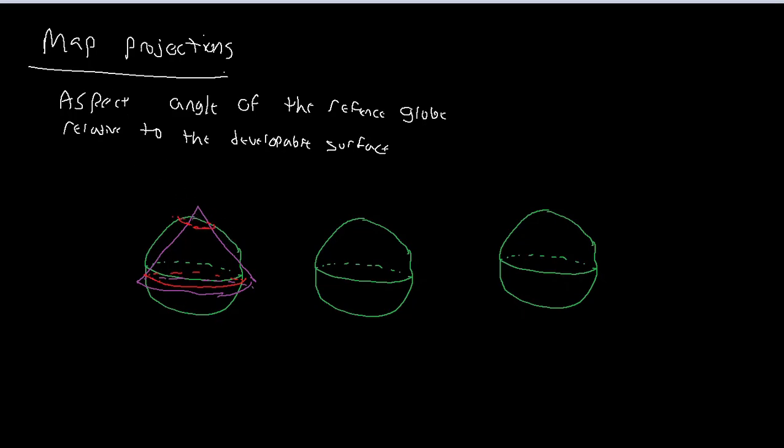So when the developable surface is oriented north-south, we call this normal or oftentimes it won't even have a name. We would just say that this is the conic projection. We don't even say it, but this is the normal aspect, or sometimes you'll see it called the equatorial, because it's oriented with the equator in mind.